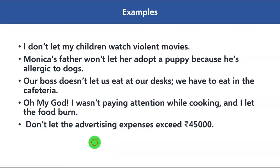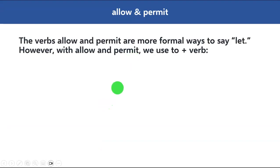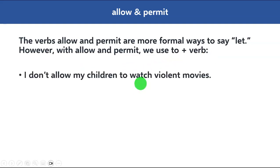Now let's move on and understand 'allow' and 'permit'. These verbs are more formal ways to say 'let'. I already told you that let, allow, and permit have the same meaning. However, with allow and permit we use 'to' plus the verb. With 'let' we don't use 'to', but with allow and permit we do.